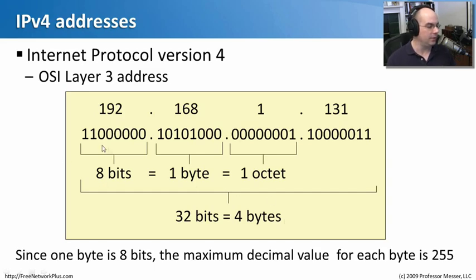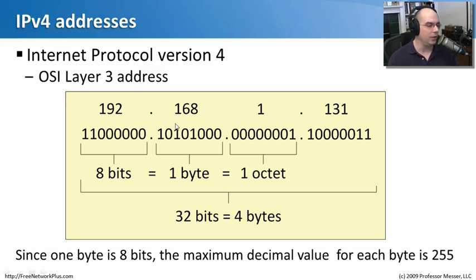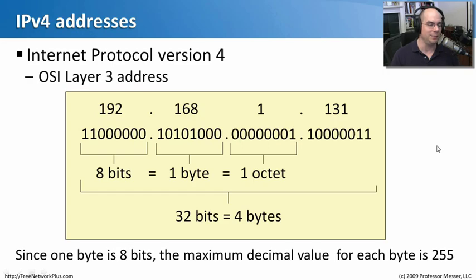Since only eight bits are available in each section, the largest number you can have in any section is 255 — you can't fit 256 in there. The biggest possible IPv4 address is 255.255.255.255, which is all 1's in binary. That's why dotted decimal is much simpler for humans to read, rather than speaking in 1's and 0's for every single address — but behind the scenes, that's exactly how your computer uses it.